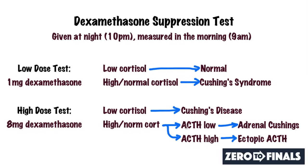If you have high or normal cortisol after the high dose test but ACTH is low, this suggests adrenal Cushing's — an adrenal tumour pumping out cortisol. ACTH is still suppressed but cortisol remains high or normal. If cortisol is high or normal and ACTH is also high, this is because the ACTH is coming from somewhere other than the pituitary — such as a small cell lung cancer — resulting in both high ACTH and high cortisol.